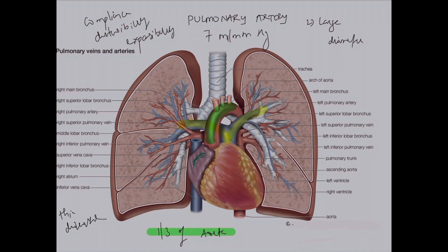The important points are: large compliance, with a value of 7 ml per mmHg, which is equal to the compliance of the systemic arteries. Because of this compliance, the pulmonary arteries can accommodate the stroke volume output of the right ventricle.